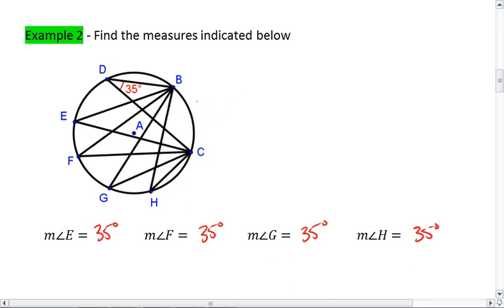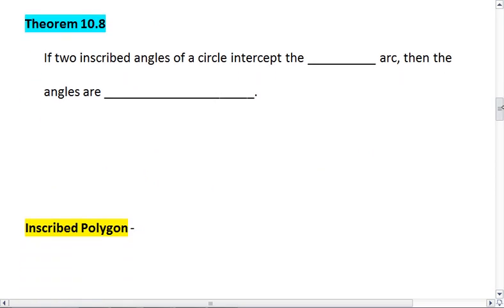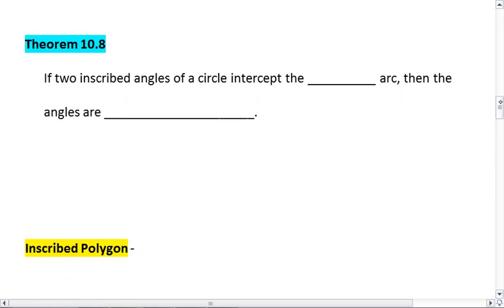What this leads us to is theorem 10.8. If two or more inscribed angles of a circle intercept the same arc, then the angles are congruent. So up here, all of these angles intercept arc BC.